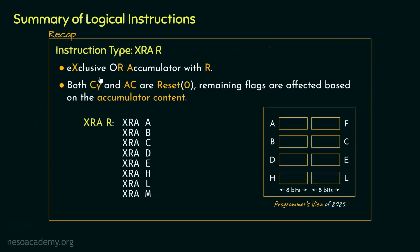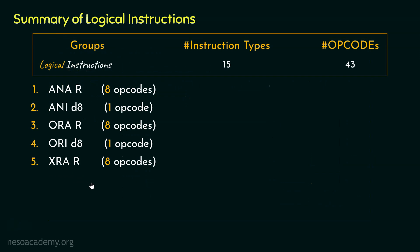The next instruction type was XRAR, which stands for exclusive OR the accumulator's content with R. Since we are using capital R, we have 8 different instructions of this type. Since exclusive OR is a variation of OR, the carry and auxiliary carry flags are to be reset, giving us 8 different opcodes for XRAR. The next type was XRID8, which performs XOR between the accumulator's content and 8-bit immediate data. For XRID8 there is a single opcode.